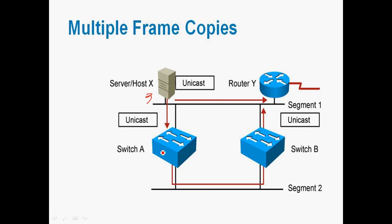Multiple frame copies is another drawback of redundant topology. Host X is connected to Switch A Fast Ethernet 0/3. Fast Ethernet 0/1 and 0/2 connect to Switch B ports 1 and 2. Router Y is on Switch B Fast Ethernet 0/3. When the host sends a unicast frame to Router Y, Switch A broadcasts to all connected ports. Both port 1 and port 2 send frames to Switch B, so Switch B also receives the same frames on ports 1 and 2, and multiple copies of the frame are received by Router Y.